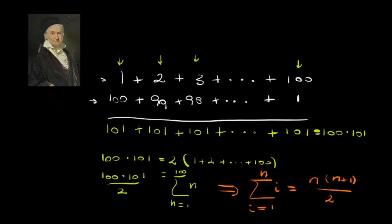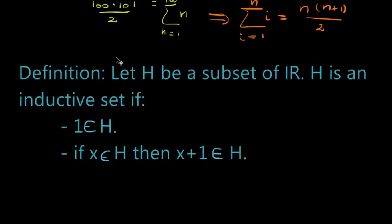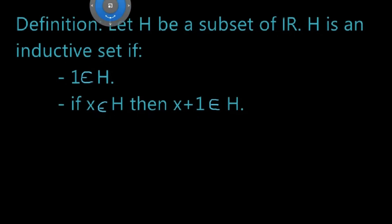This sort of equality that is valid for every natural number n is what we're gonna try and prove in this video. To do this, let's start with a definition. We're gonna have h, a subset of the real numbers, and we say that h is an inductive set if 1 belongs to h, and for every element in h, that element plus 1 is also an element of h.